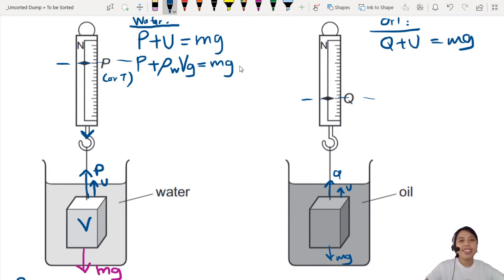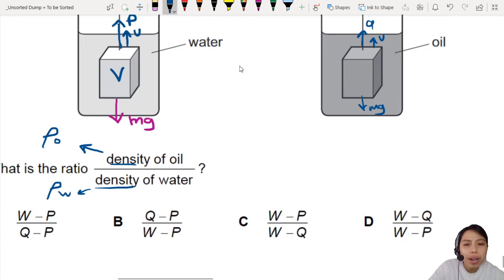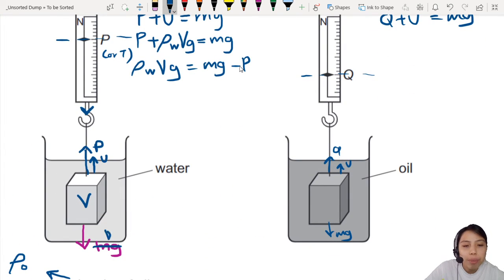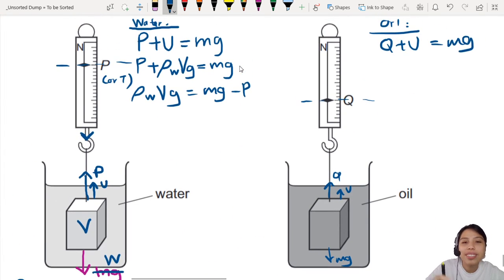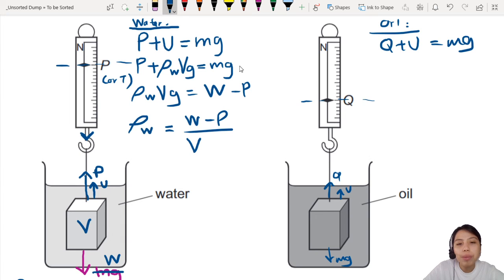Let's rearrange a bit to express for rho. So ρ_W times Vg equals to mg minus P. We can say W. So we change mg to W. Let's change this back to W, otherwise there'll be too many alphabets and we'll get a headache later. So ρ_W equals to W minus P over the volume of the object, divided by g.